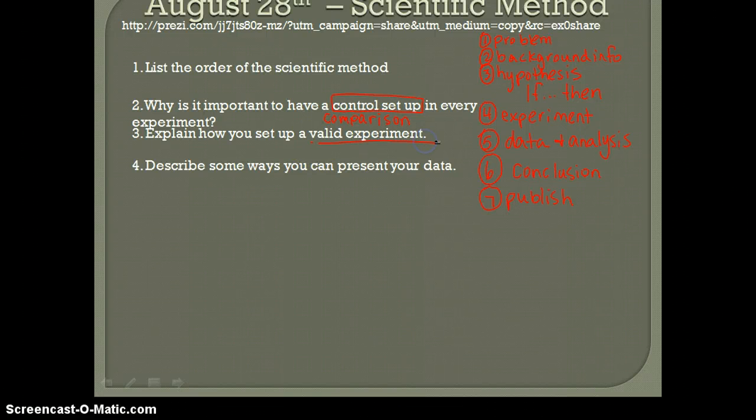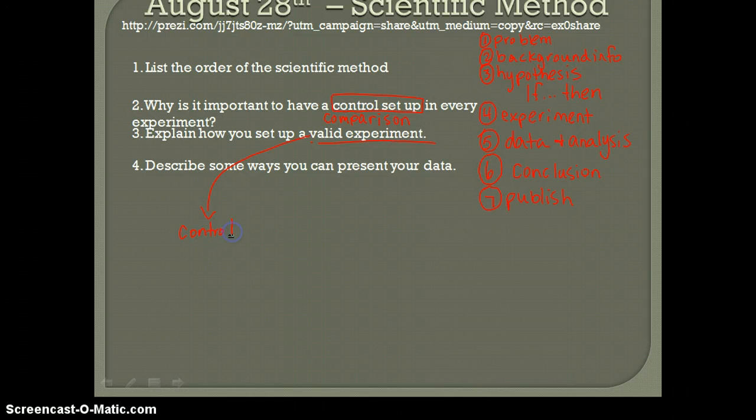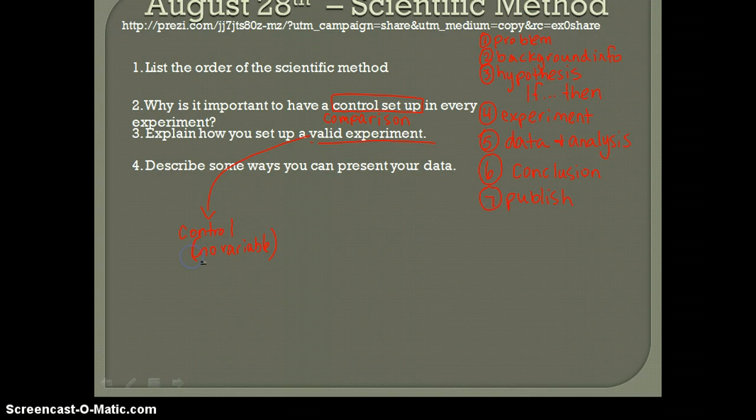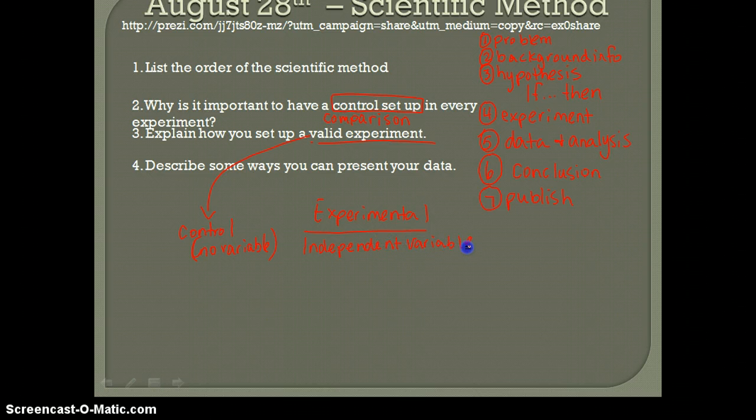So setting up a valid experiment, we're going to show that down here. You should have a control and no variable in the control. You'll have an experimental group. And in that experimental group, you are going to have your independent variable. And that is the thing you change as the scientist. So giving caffeine or giving a piece of candy.